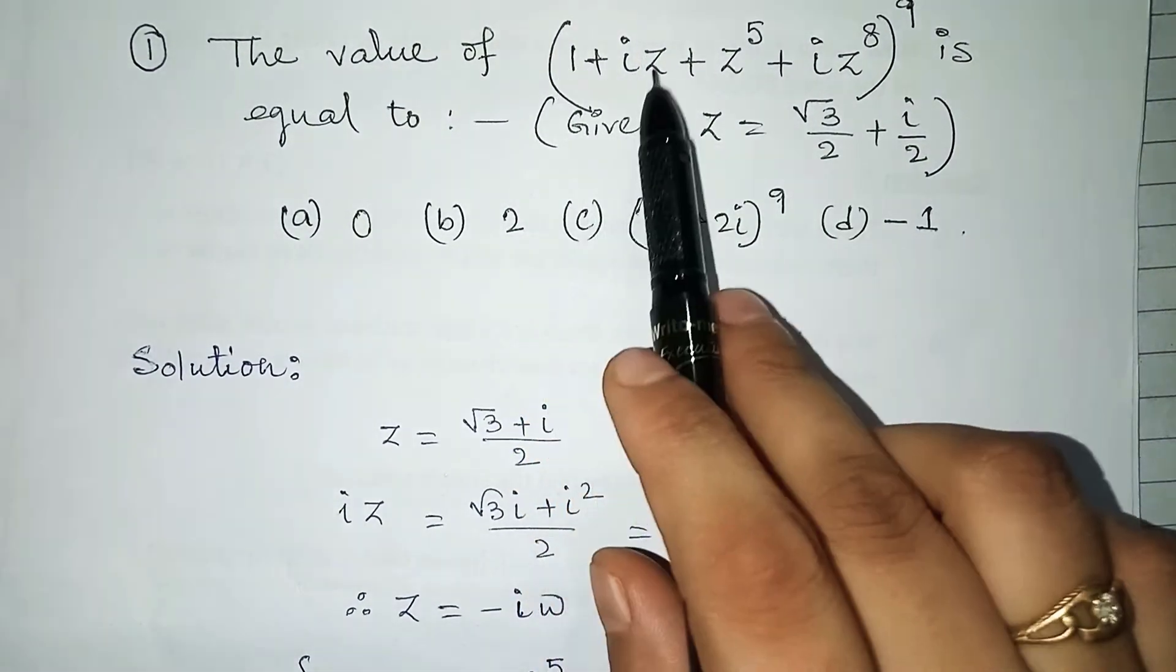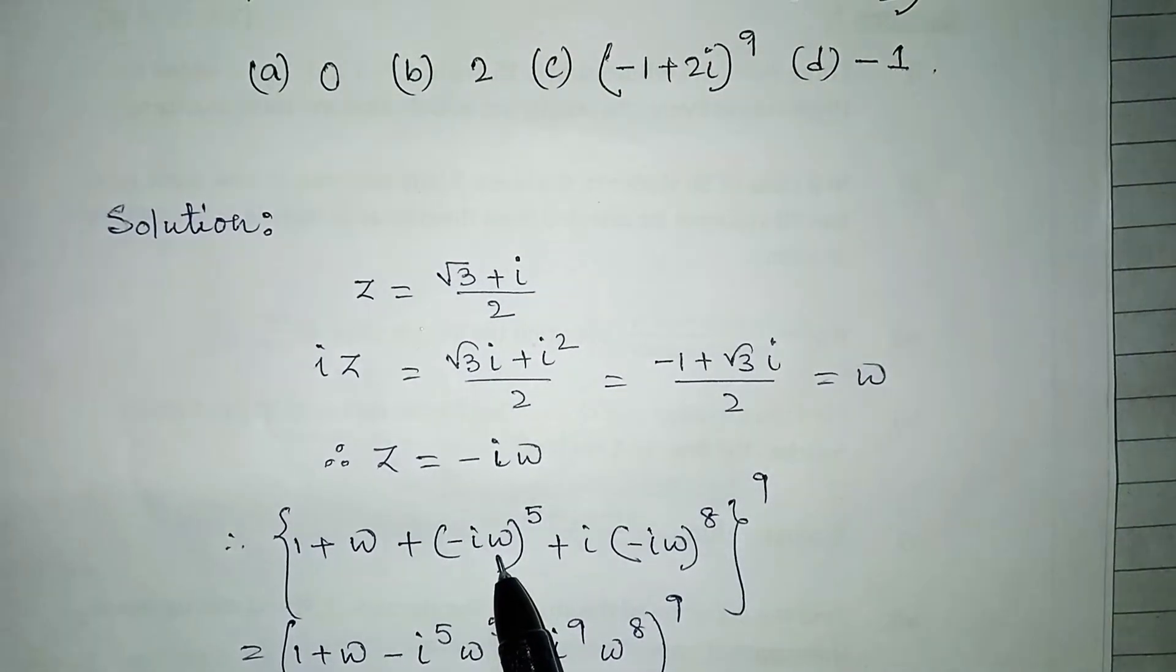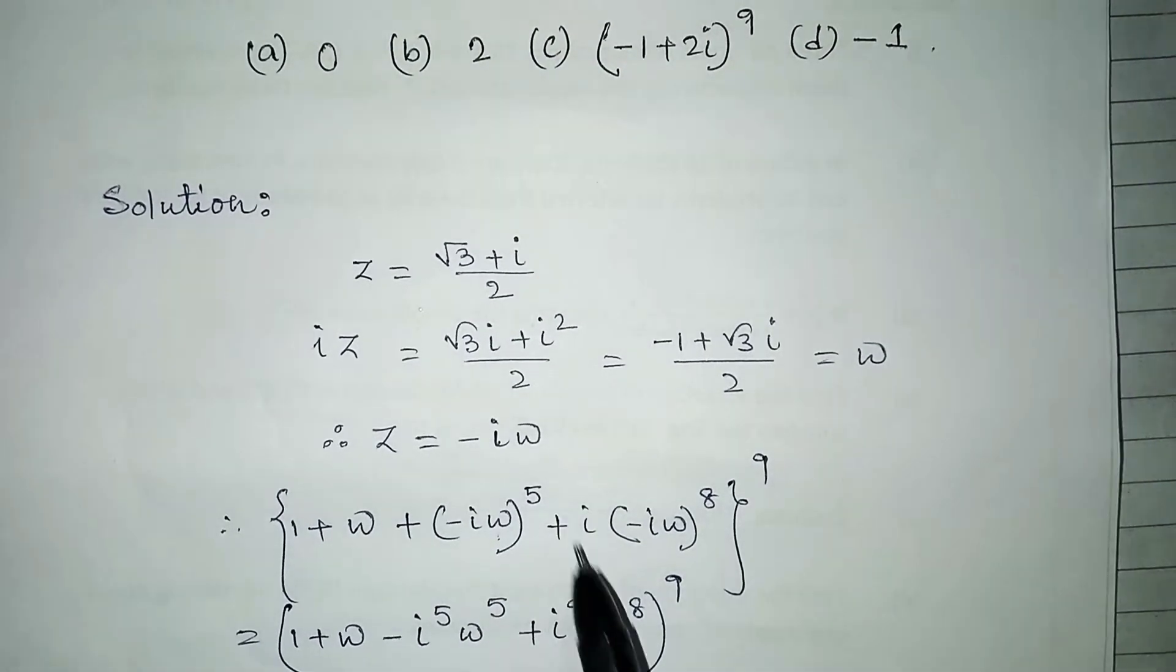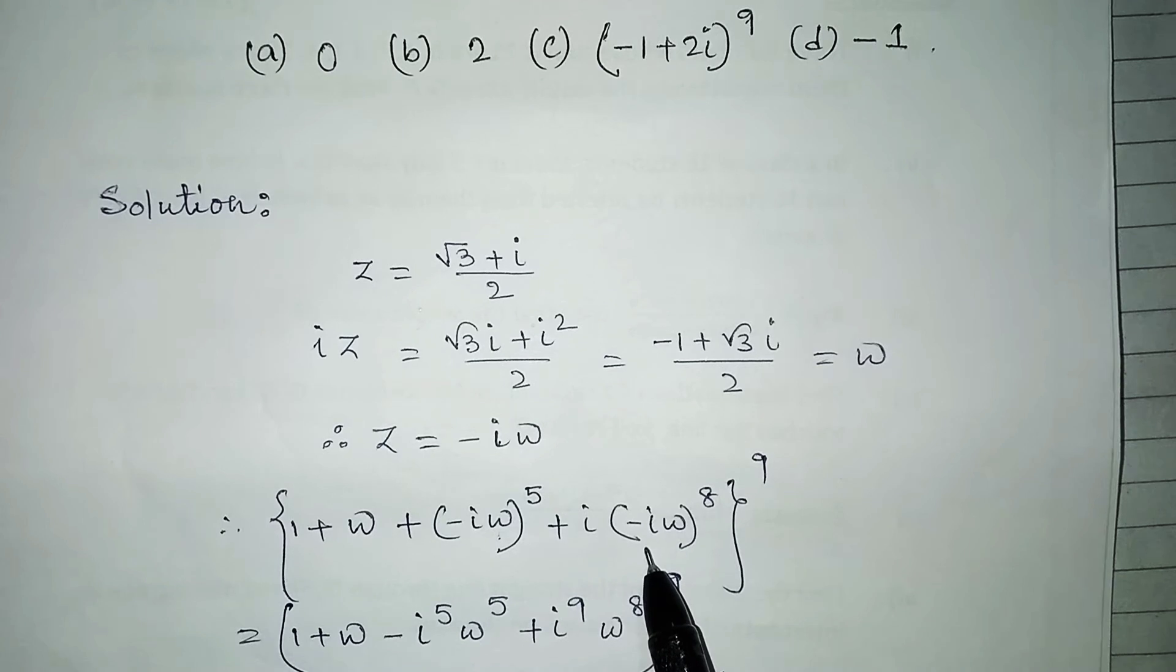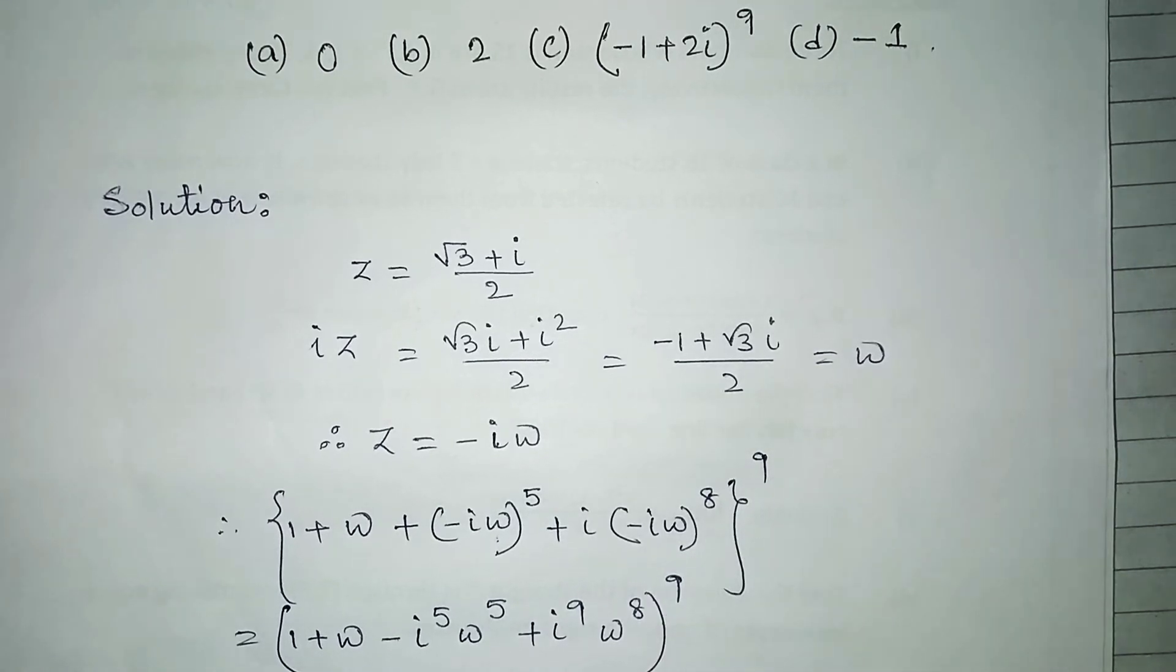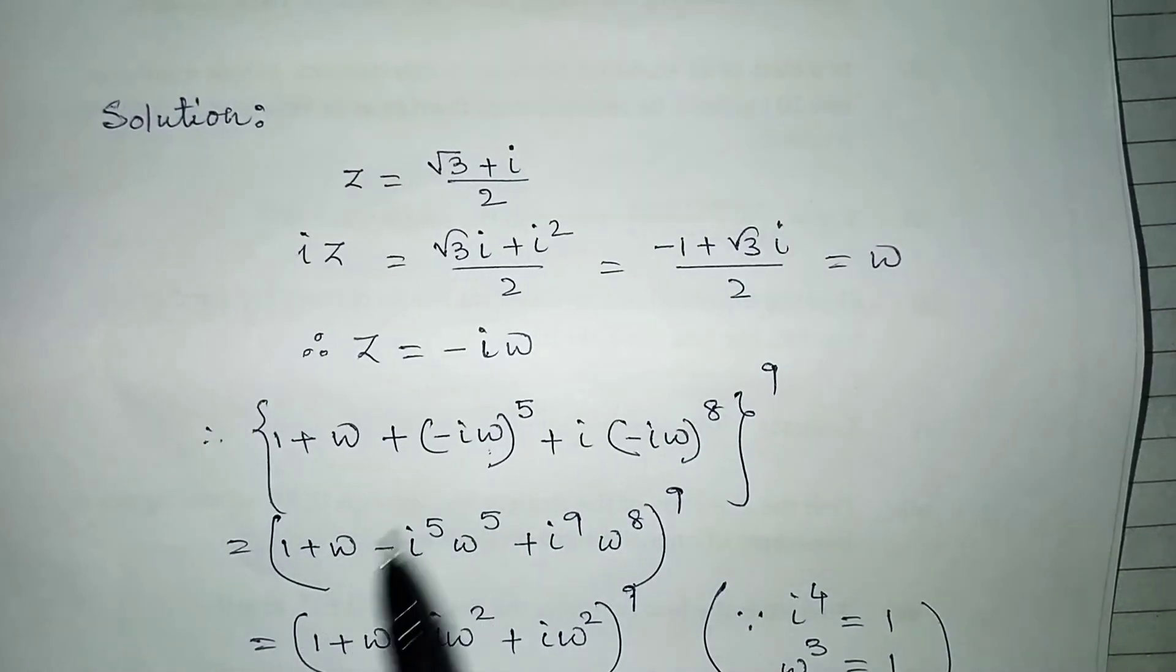Now this term, we will replace all the values. One plus omega plus z value, which is minus i omega, whole to the power five, plus i into z to the power eight, which is i omega to the power eight, whole to the power nine.